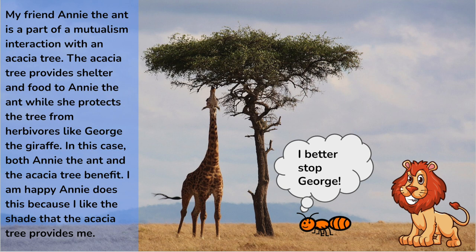My friend Annie the ant is part of a mutualism interaction with an acacia tree. The acacia tree provides shelter and food to Annie the ant while she protects the tree from herbivores like George the dik-dik. In this case, both Annie the ant and the acacia tree benefit. I'm happy Annie does this because I like the shade that the acacia tree provides for me.